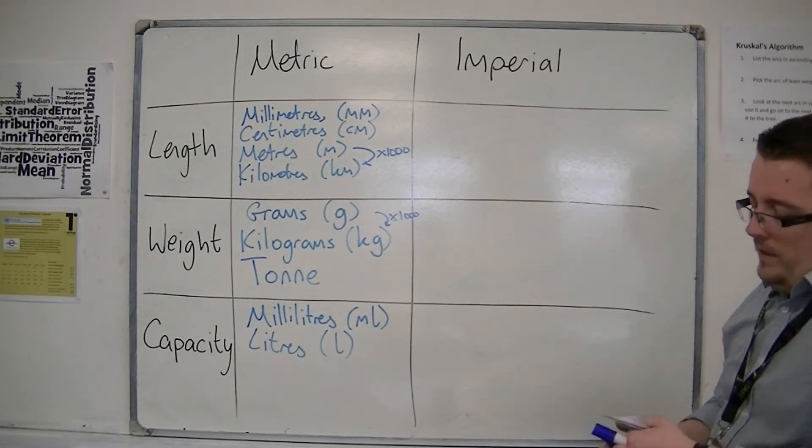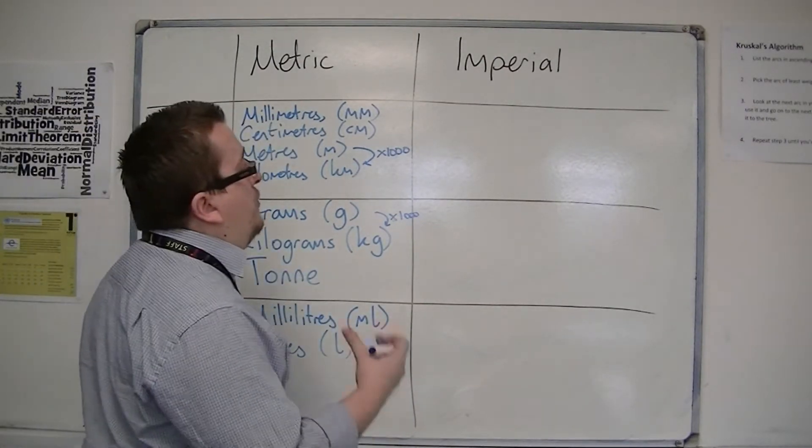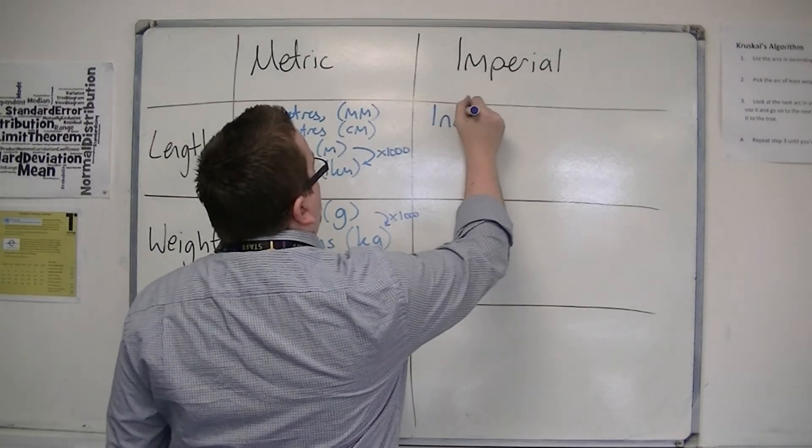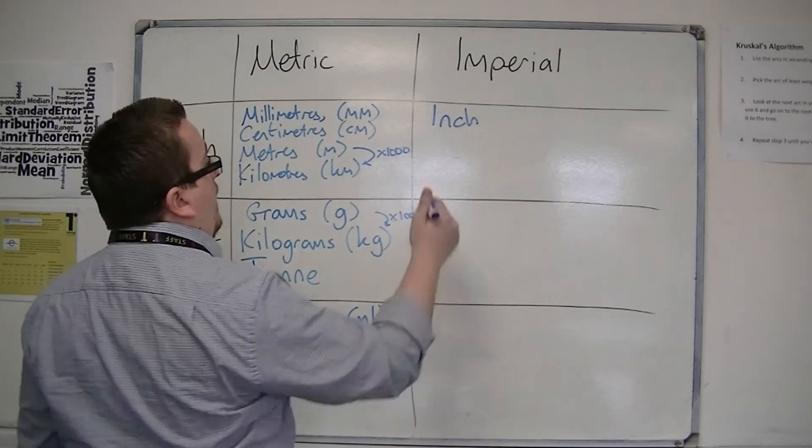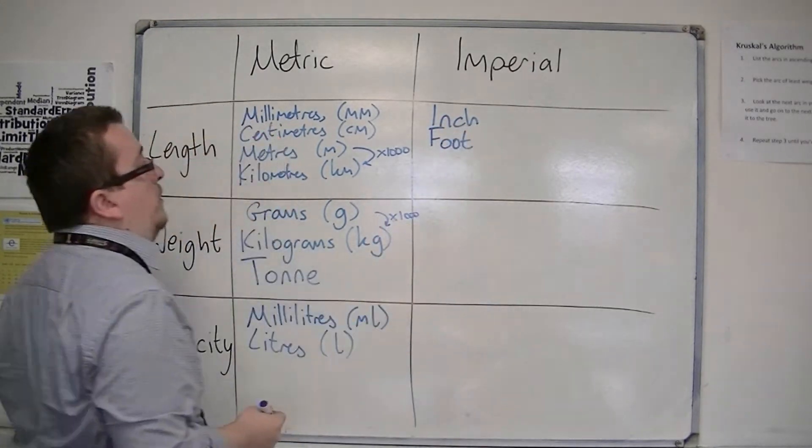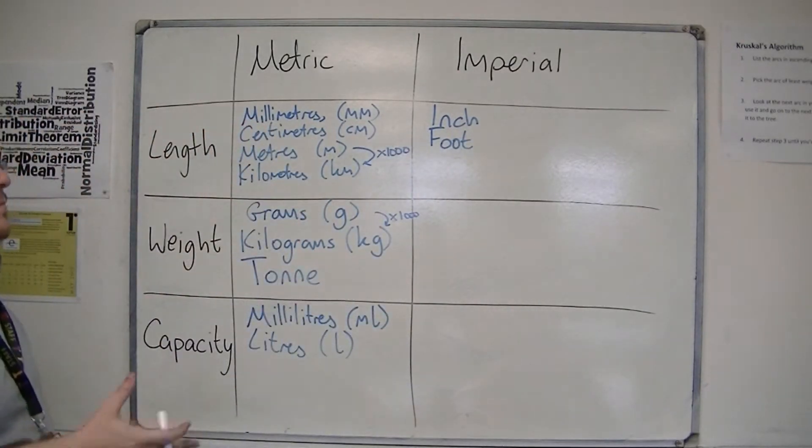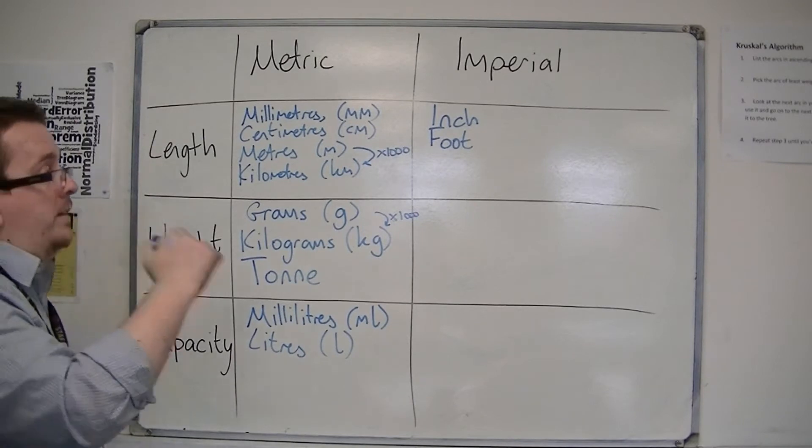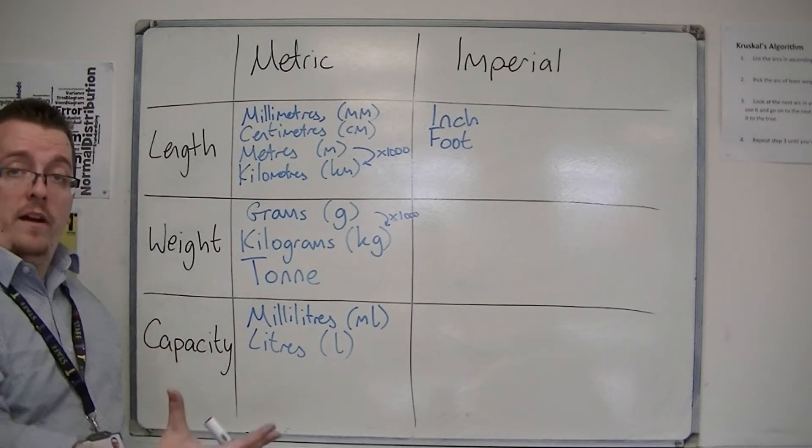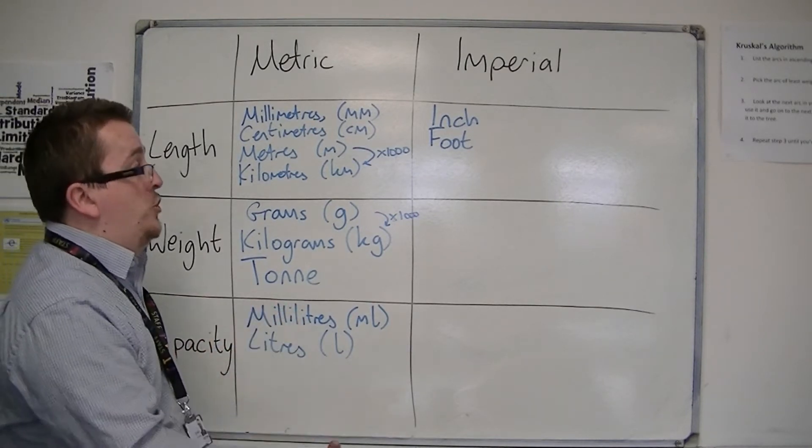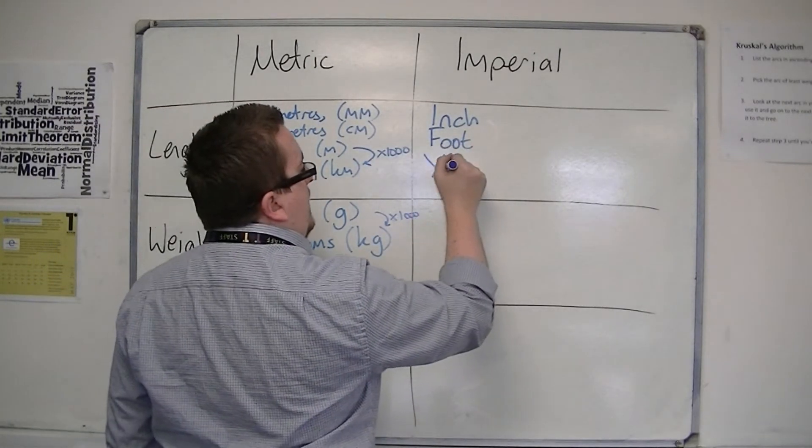So the imperial units, there's quite a few more of these. The generic ones that we're used to start off with an inch. And then you have a foot. An inch would be abbreviated to IN and foot to FT. We're used to measuring our height in feet and inches. Now there are 12 inches in a foot.